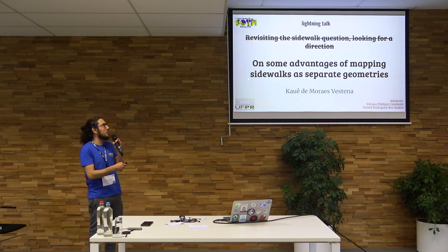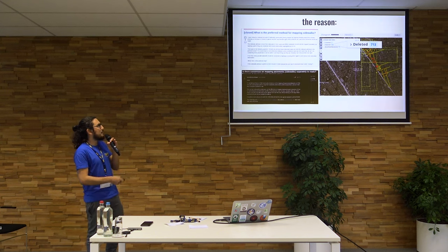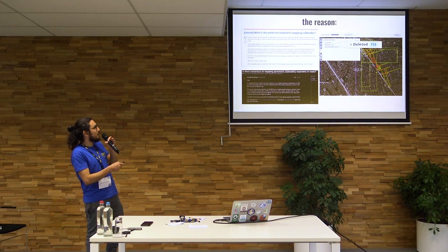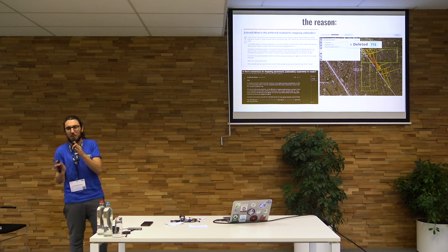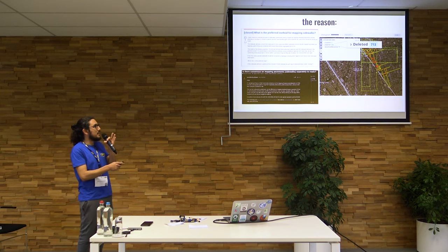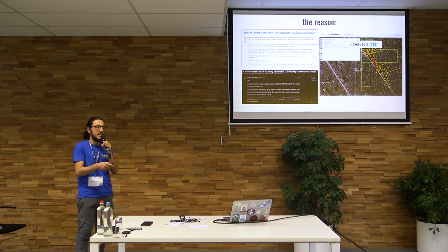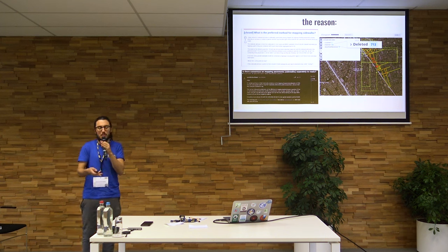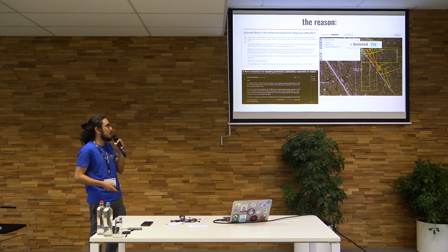So it's a lightning talk about some advantages of mapping sidewalks as separate geometries. The reason is this: when you go to the forums, you see it's like a polemic question, and above all, it's always up to the local community to decide which standard they find better. But at some point in my city, I was mapping sidewalks as separate geometries, and then there was this guy — he deleted almost a thousand features of sidewalks that we were mapping there with my mapping group, which has lots of other active OpenStreetMap members.